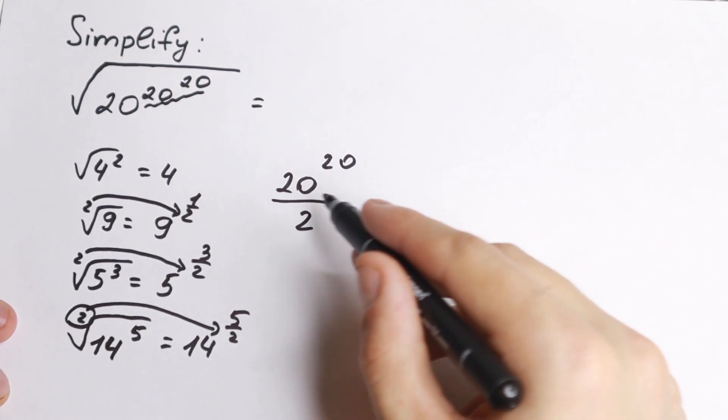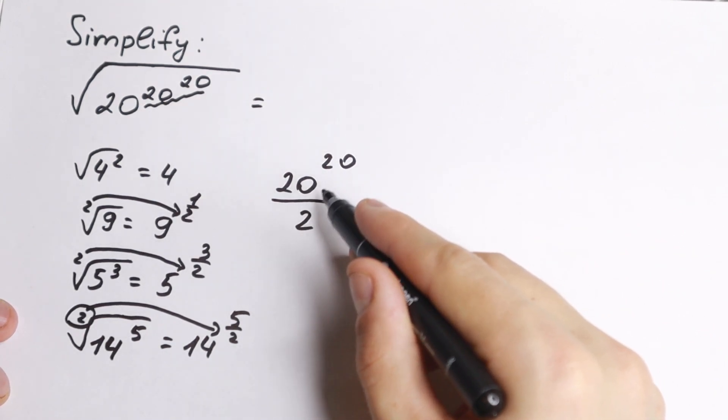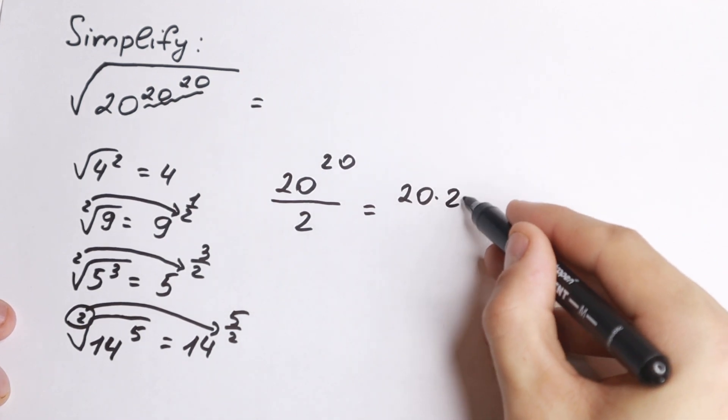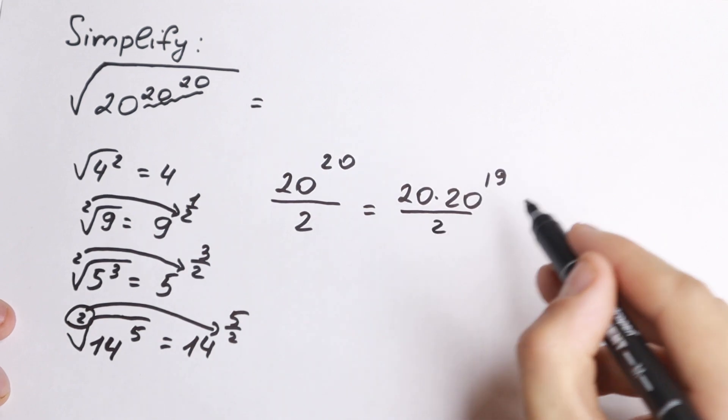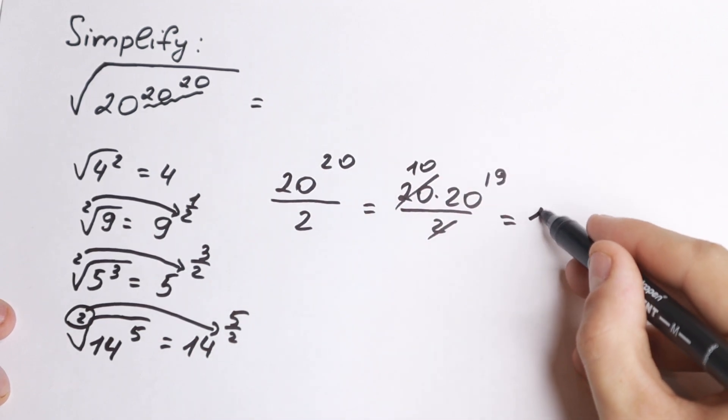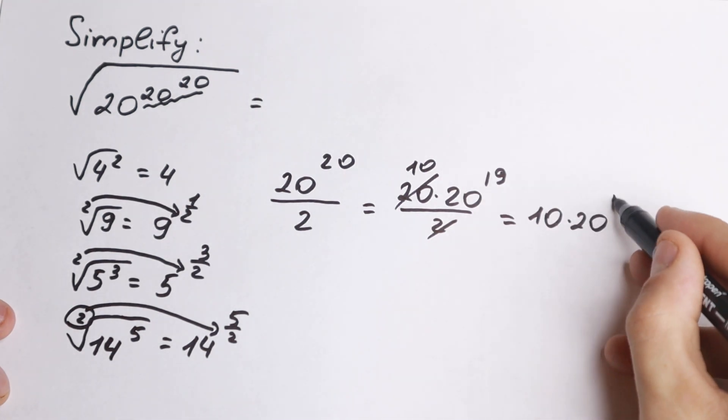So what we'll have? Right here we will have 20 to the power 20 divided by 2. So we can write it as 20 times 19. Dividing by 2, cancel, and we'll have 10. So our power is 10 times 20 to the power 19.